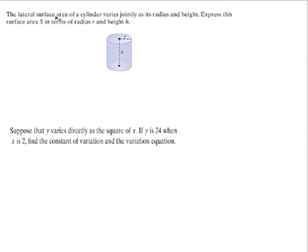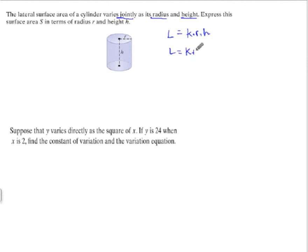So we have here the lateral surface area of a cylinder. Remember, lateral surface area does not include the circle on the top or the circle on the bottom — it's just the label of the soup can. The lateral surface area of the cylinder varies jointly as its radius and height, so L is equal to k times radius times height: L = k·r·h.